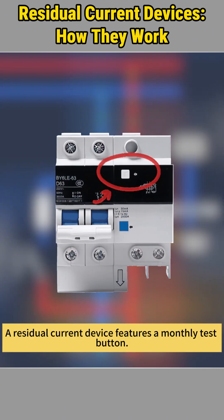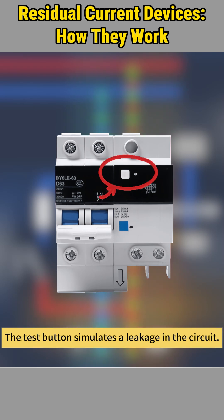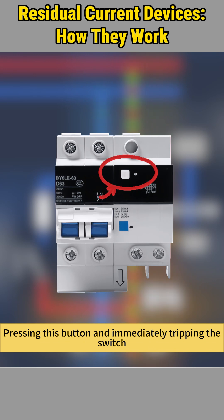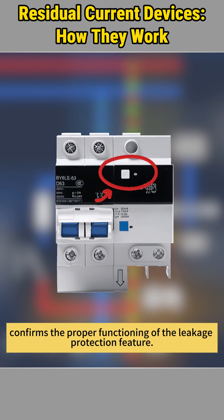A residual current device features a monthly test button. The test button simulates a leakage in the circuit. Pressing this button and immediately tripping the switch confirms the proper functioning of the leakage protection feature.